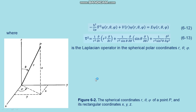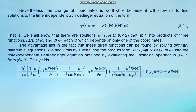Nevertheless, the change of coordinates is worthwhile because it allows us to find solutions to the time-independent Schrödinger equation of the form given in formula 6.14. We shall show that there are solutions psi(r,theta,phi) to equation 6.12 that split into a product of three functions: R(r), Theta(theta), and Phi(phi), each depending on only one coordinate. The advantage lies in the fact that these three functions can be found by solving ordinary differential equations.